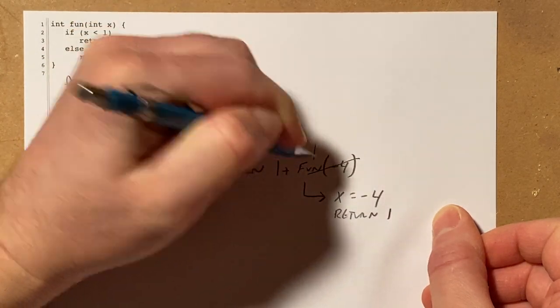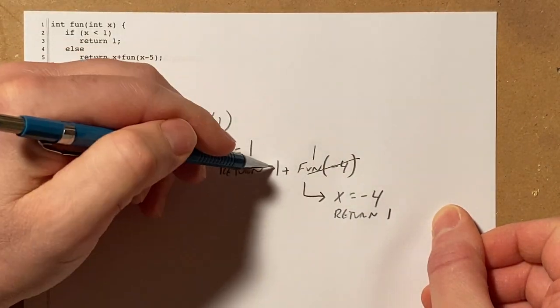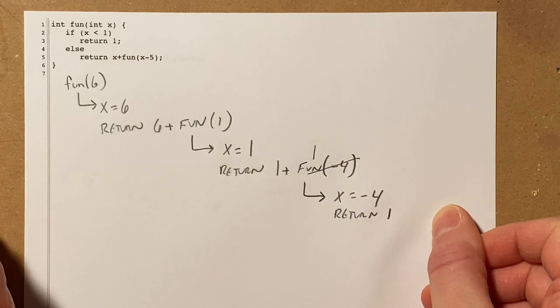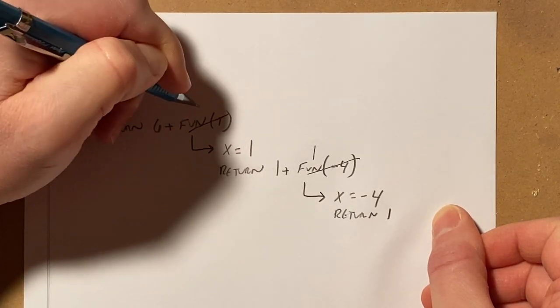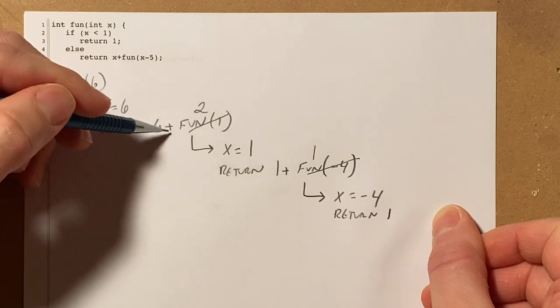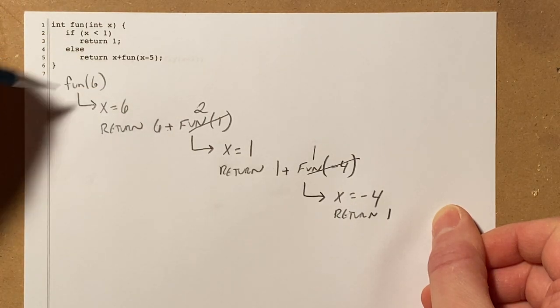So I'm going to cross that out and replace it with 1 and I'm going to return 1 plus 1 or 2. So I'm going to cross this out and replace it with 2. I'm going to return 6 plus 2 or 8.